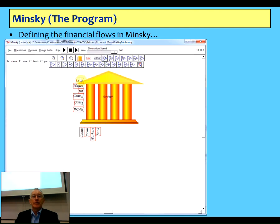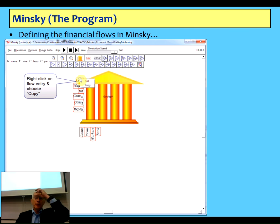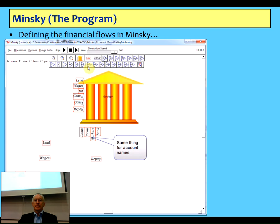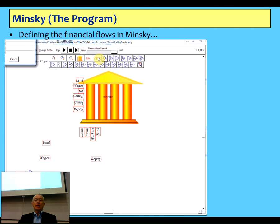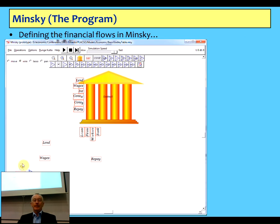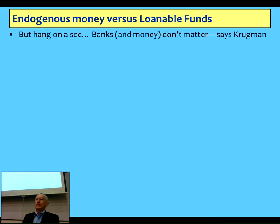To find the financial flows in Minsky — if you right-click and choose copy, you can drag that flow down off the canvas and put it somewhere else. The same thing for the accounts. The simplest account to define would be the flow where interest flows. Interest flows are going to be the rate of interest on loans multiplied by loans. You simply create a constant or parameter called rate of loans, wire them up, and you've defined that particular part of the financial system. It's gone from a logical structure to a modelling structure.